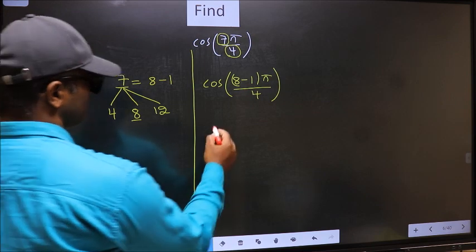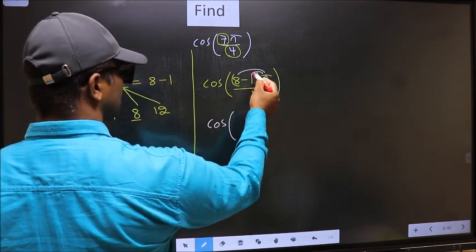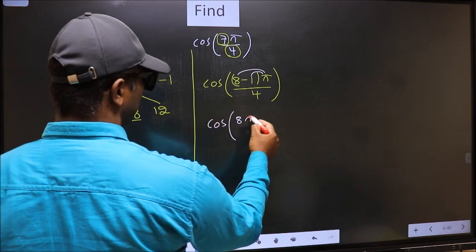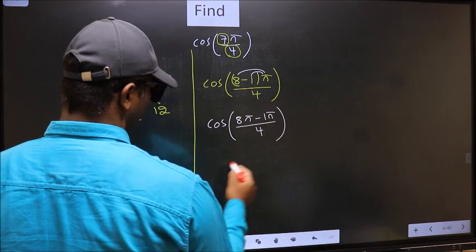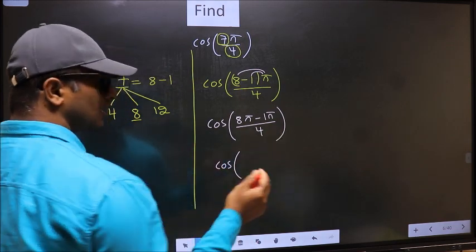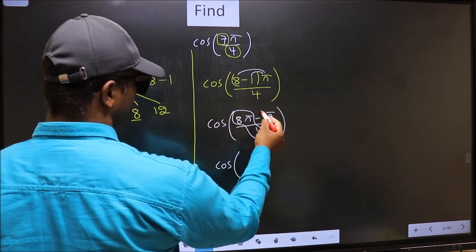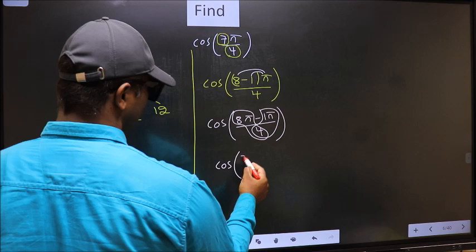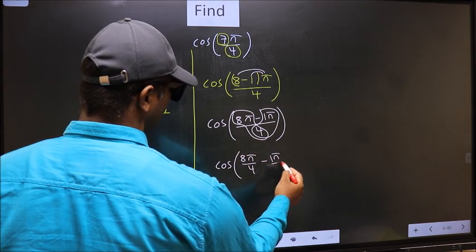Next. Cos. Now you should open up the brackets. You get 8π minus 1π by 4. Now cos. In this, you should split the denominator in this way. That is, 8π by 4 minus 1π by 4.